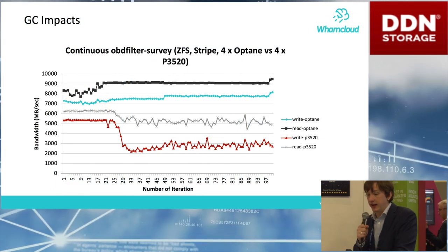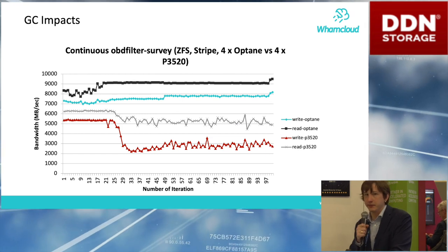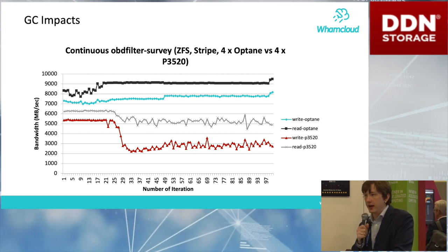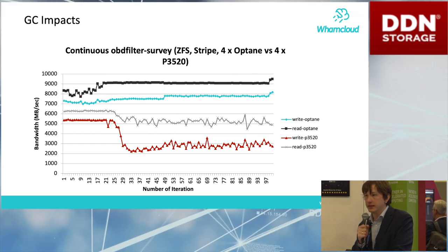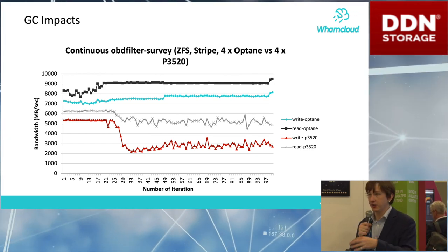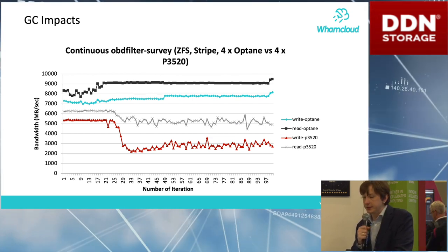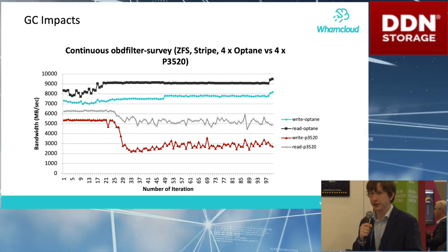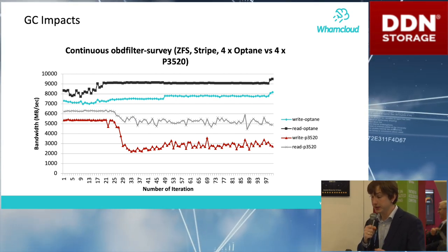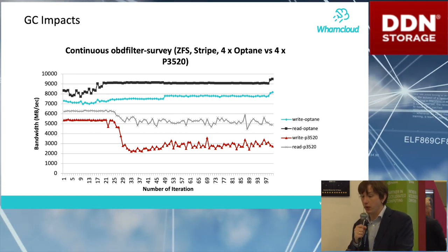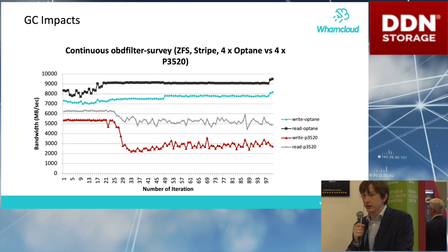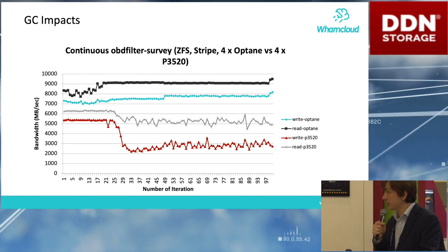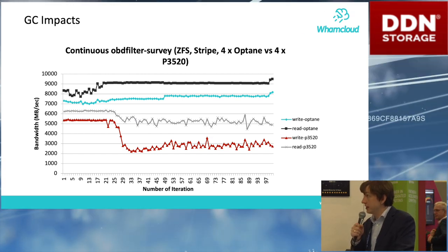Here is interesting information that came from DDN, specifically from the Lustre team within DDN. This is our first test of Optane SSDs in storage mode inside Lustre OSTs, comparing them to very good NAND-based SSDs. There are four lines: two tests — reads and writes. Both top lines are performance numbers for Optane SSDs, four of them under ZFS configuration. The two bottom lines are the same workload with four NAND-based SSDs under ZFS.